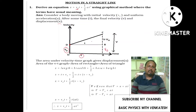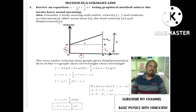The area under the velocity-time graph gives the displacement. The area of the velocity-time graph equals the area of the rectangle plus the area of the triangle. The displacement x is covered in time t, so x equals the area of the rectangle plus one-half times base times height.